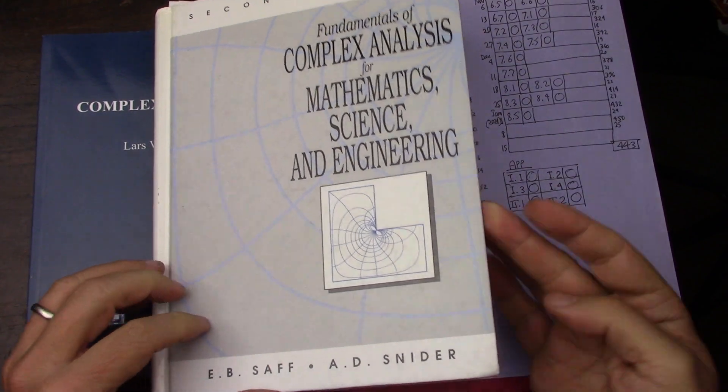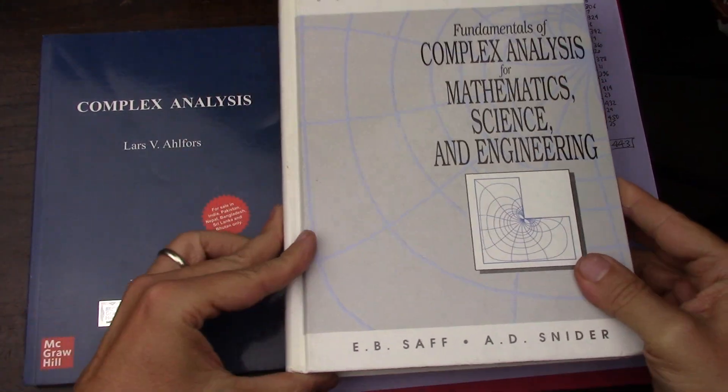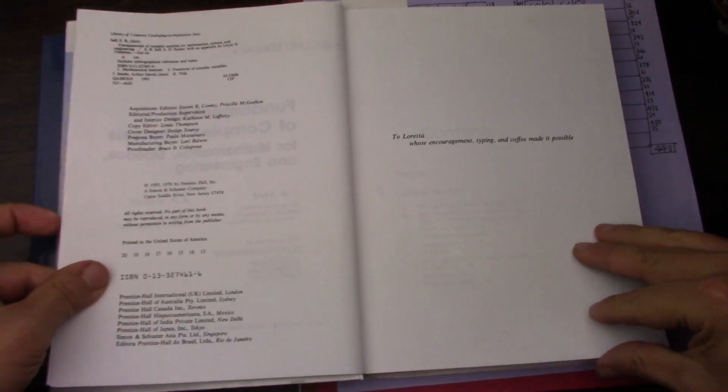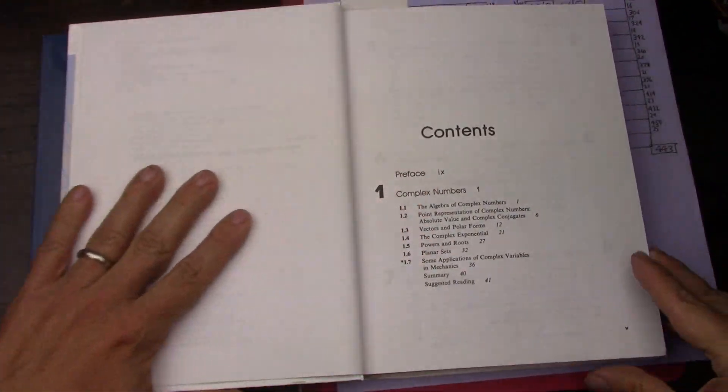There's a third one that's a little bigger, but I wanted to buy this one, and it's fine. They're comparable, I think. And so for Saff and Snyder, the way the book is structured...